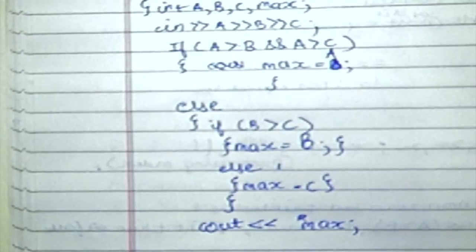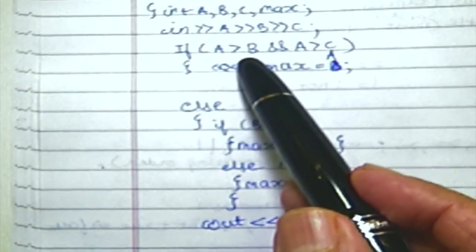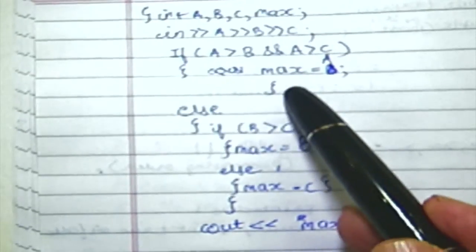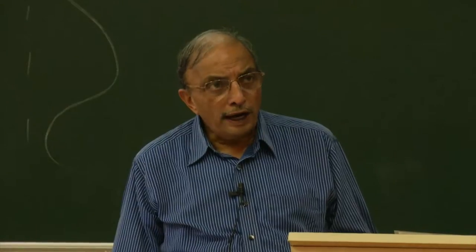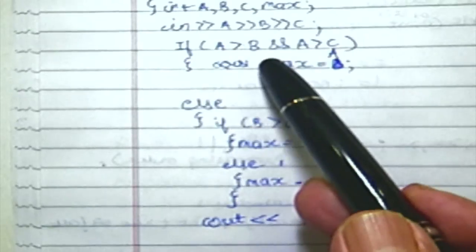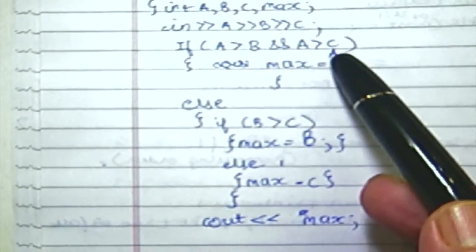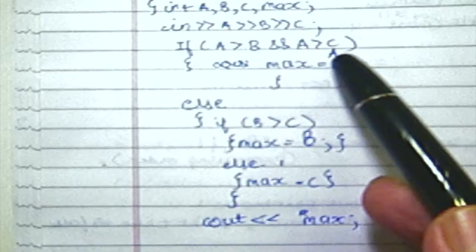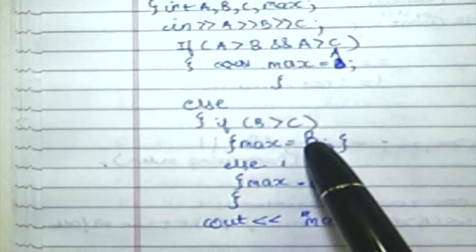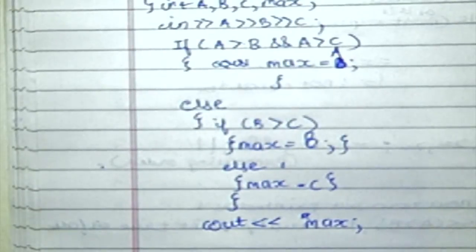Somebody is saying no. Let us examine this program as is. It says if a is greater than b AND a is greater than c, then max is equal to a. So if a is indeed the largest of all three, a will come out to be the maximum. If it is not so — that means a is either equal to or less than b, or less than or equal to c — you come to the else part and examine whether b is greater than c. If b is greater than c, max equals b; else max equals c.